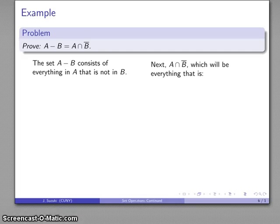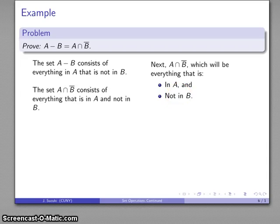If you're in B complement, this is the set of things that are not in B. So if you're in this set, you're not in B. So this set A intersect B complement are things that are in A and not in B.